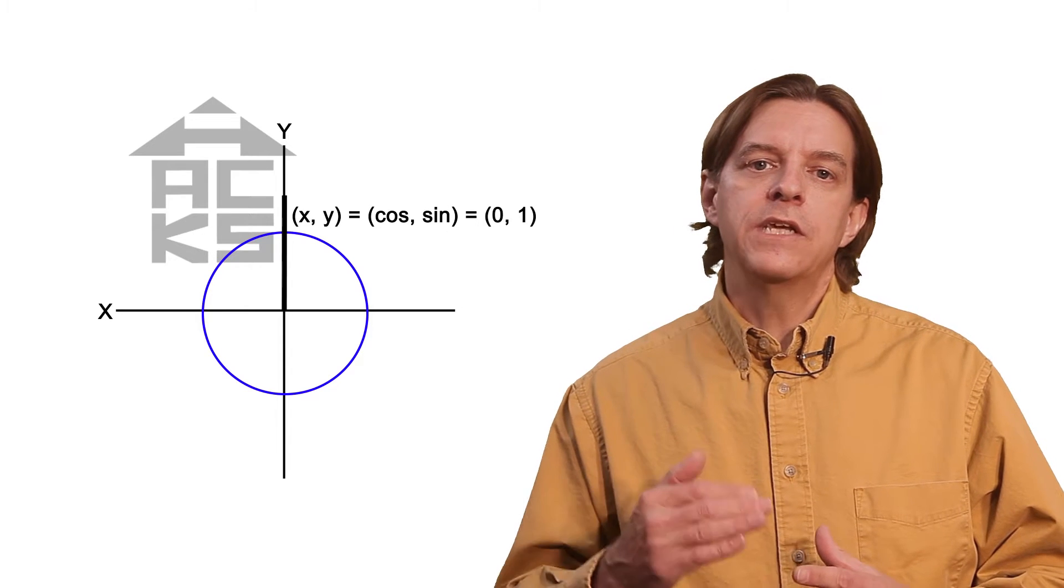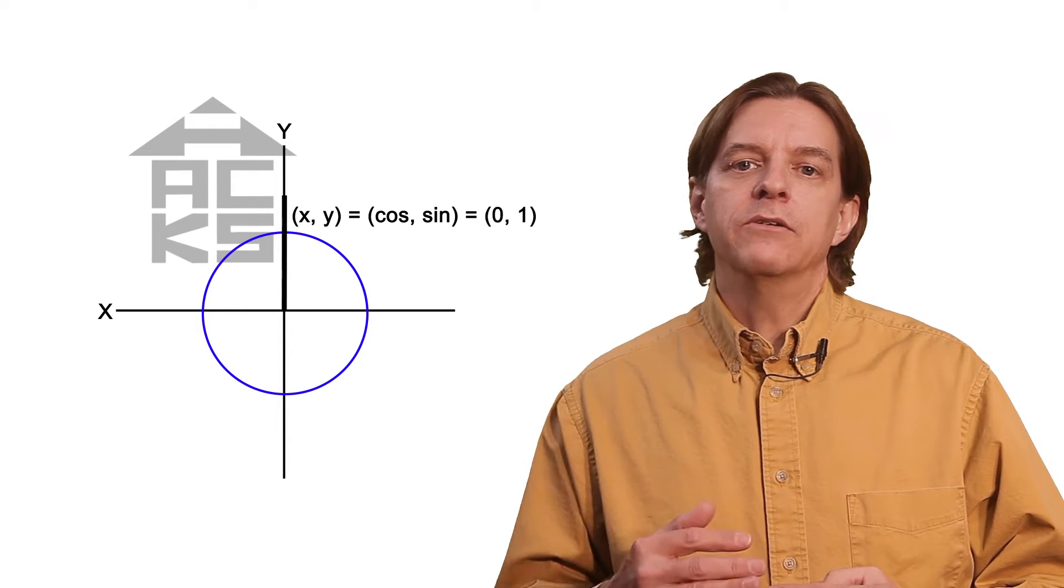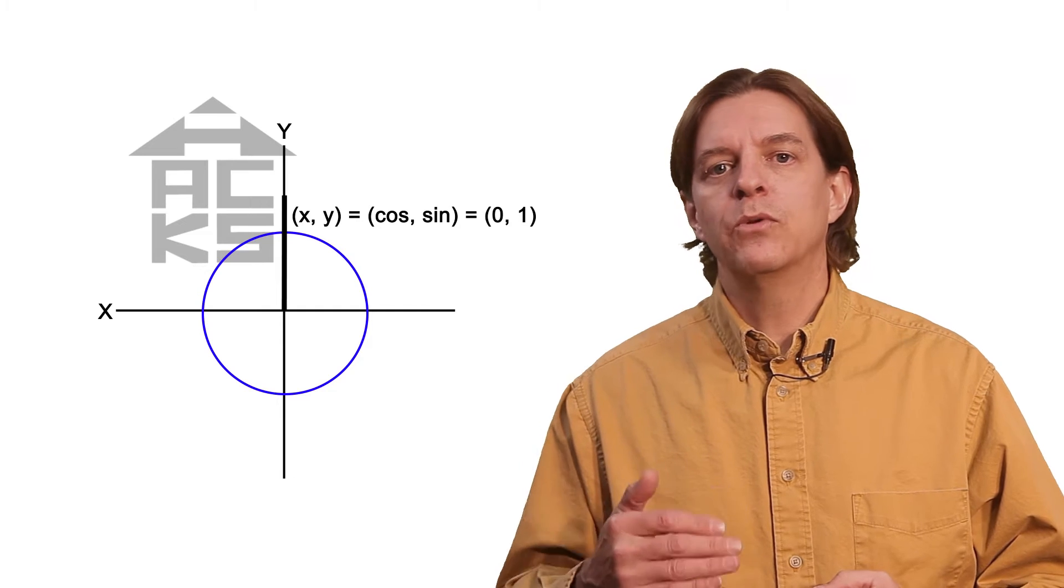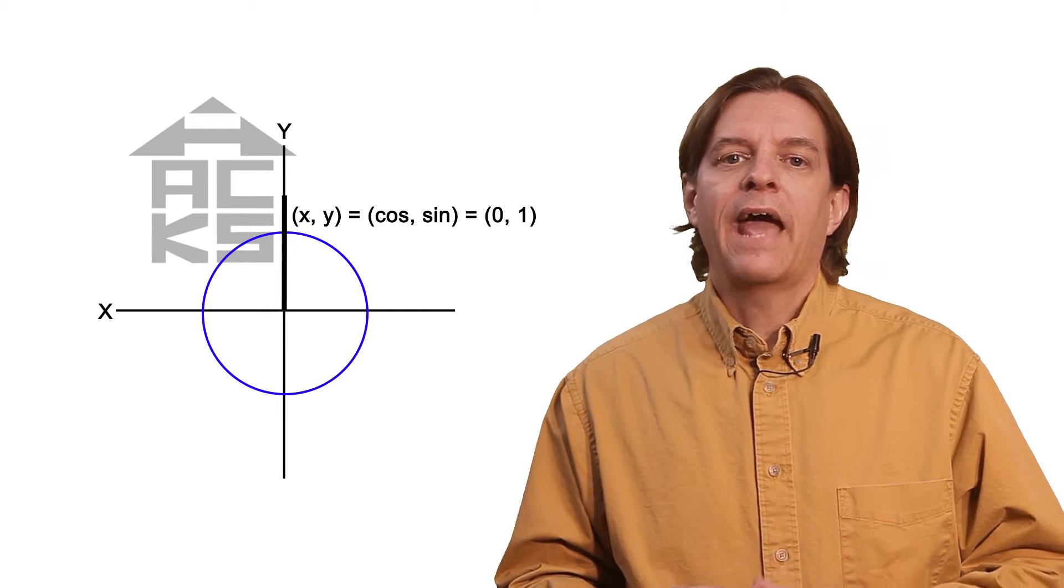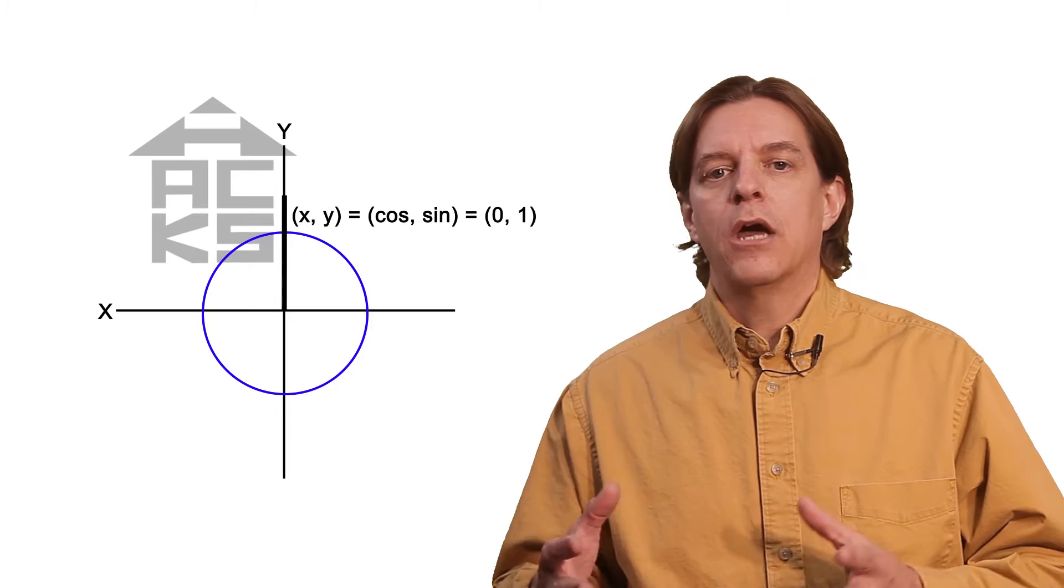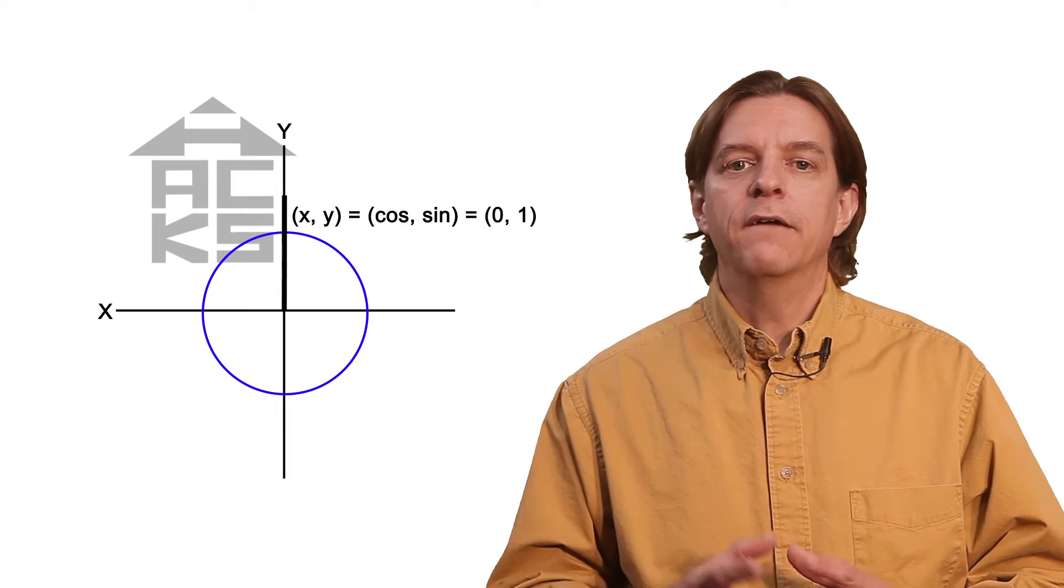As the angle continues to increase, the x and y values continue to change, always between 0 and 1, always on the circle. And that's the fundamental theory behind trigonometry. Everything else is derived from this.